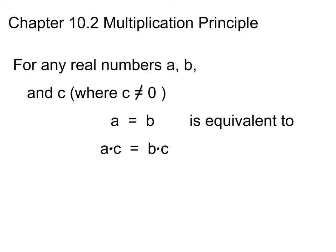We're going to continue on with chapter 10.2, the multiplication principle. The definition states: for any real numbers a, b, and c, where c is not equal to 0, if a equals b, then it is equivalent to a times c equals b times c.